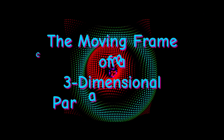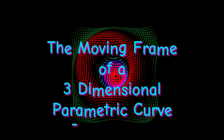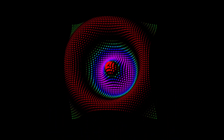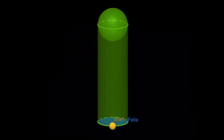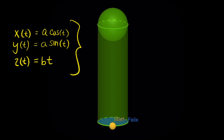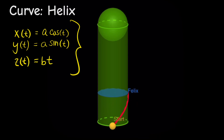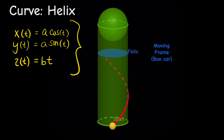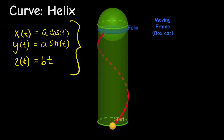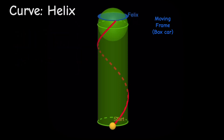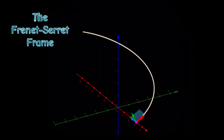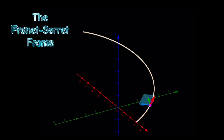Now we take this to talk about three-dimensional curves and surfaces by first considering the moving frame of a three-dimensional parametric surface. Consider our helix from last time given by its parametric equations — the helical curve wraps around the surface of a cylinder, and as you would move along this curve, as Felix the ant did in our last video, we can imagine Felix traveling along a moving frame.